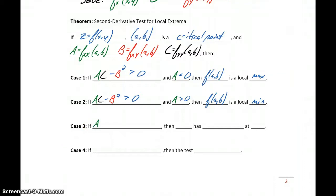So those are our first two cases. The next case is the case where A times C minus B squared is something less than zero. In that case, we would say that f(x,y) has a saddle point at (a,b). Saying that there's a saddle point is the same thing as saying that there is no maximum or minimum.